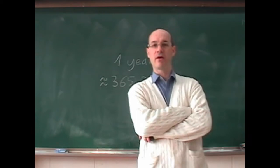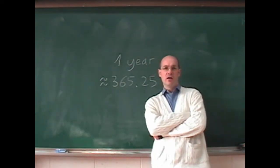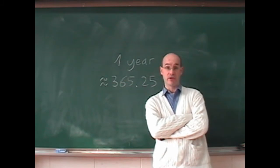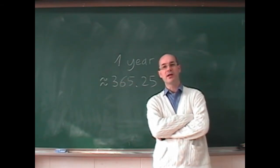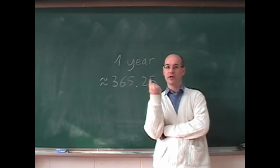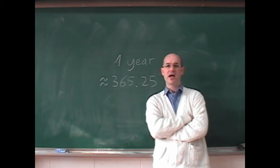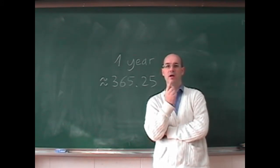Everybody knows that the Earth turns around the Sun in one year, which is approximately 365.25 days. My question is: during the same period of one year — 365.25 days — how many times does the Earth turn around itself? I mean 360 degrees.